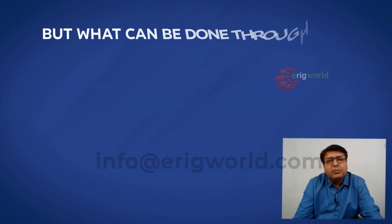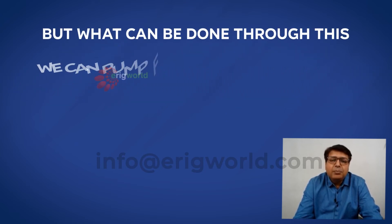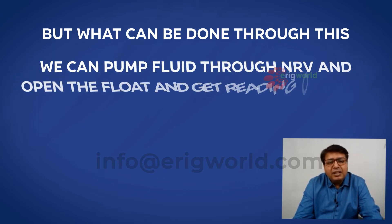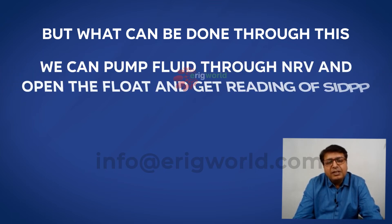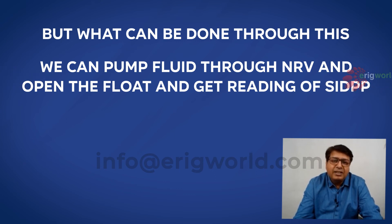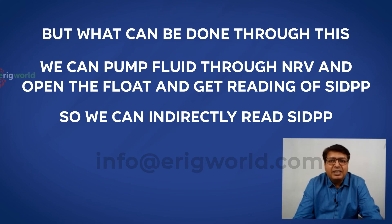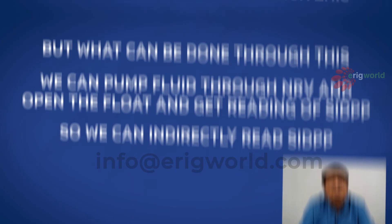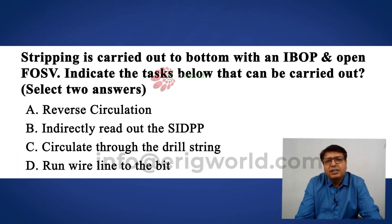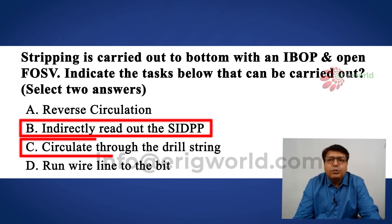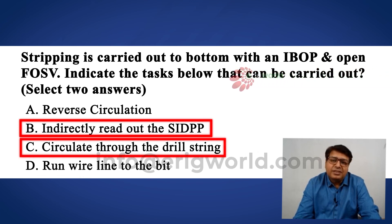But what can be done through this? We can pump fluid through the NRV, open the float, and get a reading of SIDPP. So we can indirectly read SIDPP. The answer for this question is: indirectly read SIDPP and circulate through the drill string.